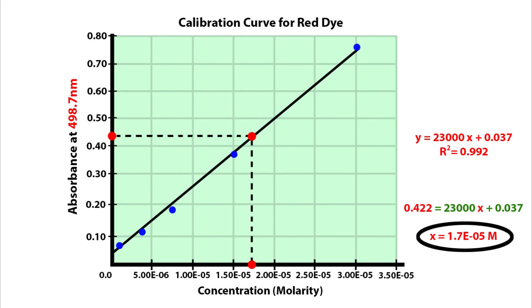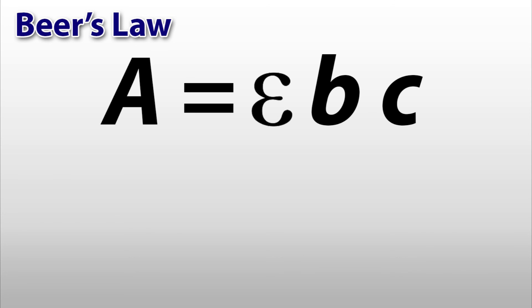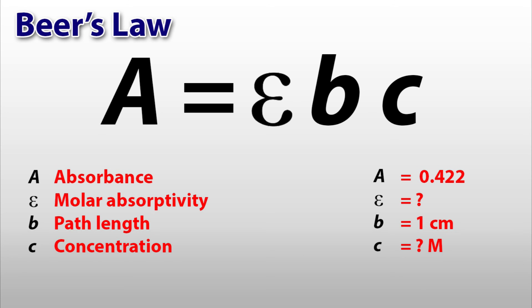You can also do this with Beer's Law. We talked about A being the absorbance, B being the path length for the light to travel through, in our case this is 1 cm because this is how wide the cuvettes are, and C is the concentration of our substance.